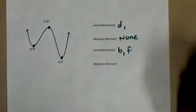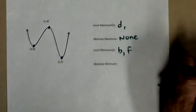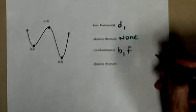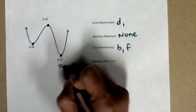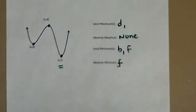Then absolute minimums. Are there any points that are lower than any other point on my graph? And in this case, there is one of those, that point e, f. So just the y value though would be f.